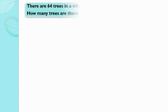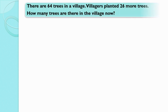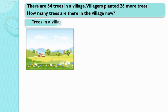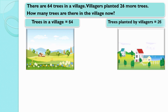There are 64 trees in a village. Villagers planted 26 more trees. How many trees are there in the village now? Trees in a village is equal to 64. Villagers planted more trees is equal to 26.